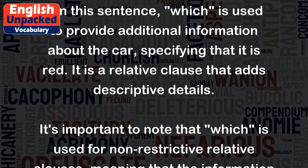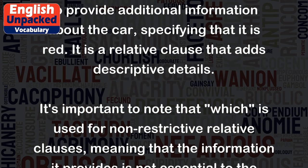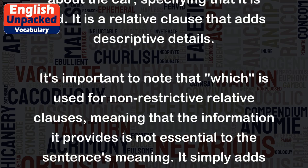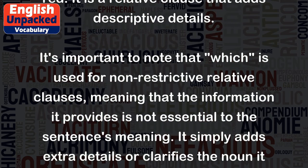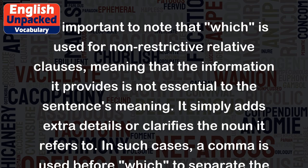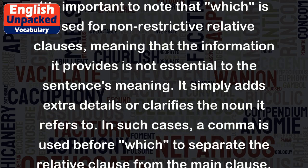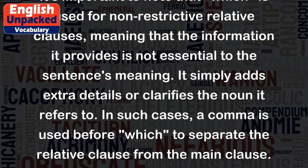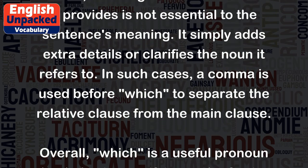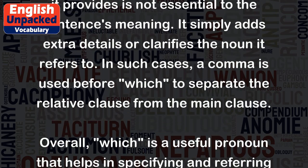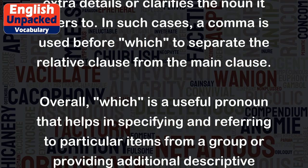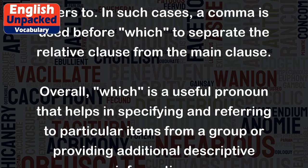It's important to note that WHICH is used for non-restrictive relative clauses, meaning that the information it provides is not essential to the sentence's meaning. It simply adds extra details or clarifies the noun it refers to. In such cases, a comma is used before WHICH to separate the relative clause from the main clause.